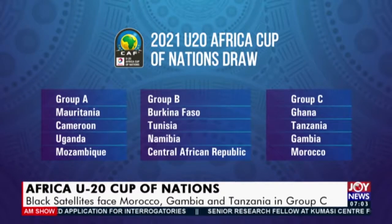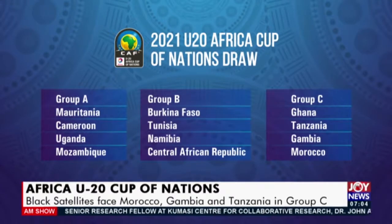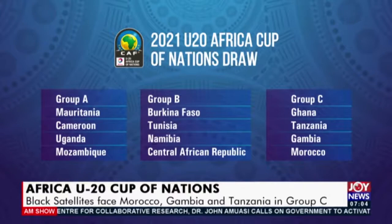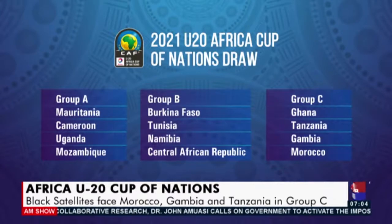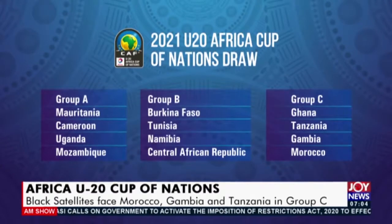Group A includes the host country Mauritania, Cameroon, Uganda, and Mozambique. Group B has Burkina Faso, Tunisia, Namibia, and Central African Republic. Ghana finds itself in Group C alongside Tanzania, Gambia, and Morocco. The Black Satellites will start their tournament by playing against Tanzania.